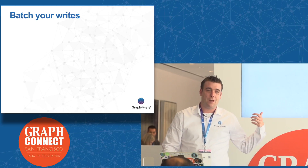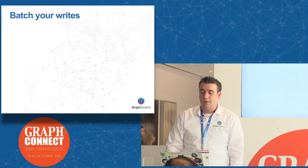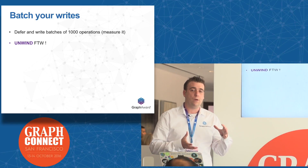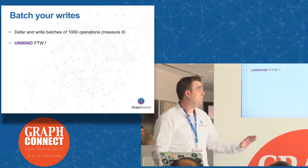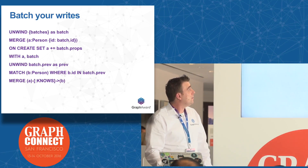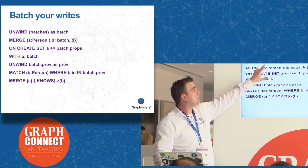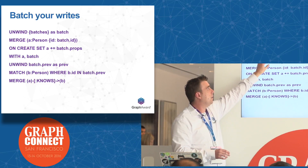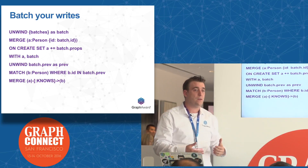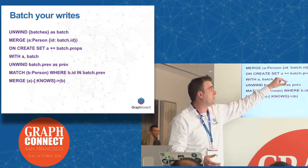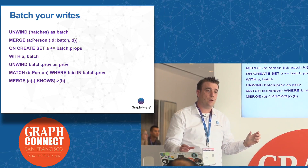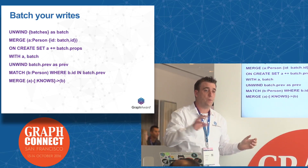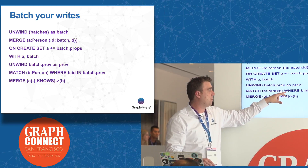You can also defer writes at the application level. Keep an array of dozens of operations and then use UNWIND. UNWIND is very powerful in Neo4j. For example, create an array at the application level and pass it as a parameter. It will iterate the array, create person nodes with properties, and also create relationships between persons by matching connections and creating them.